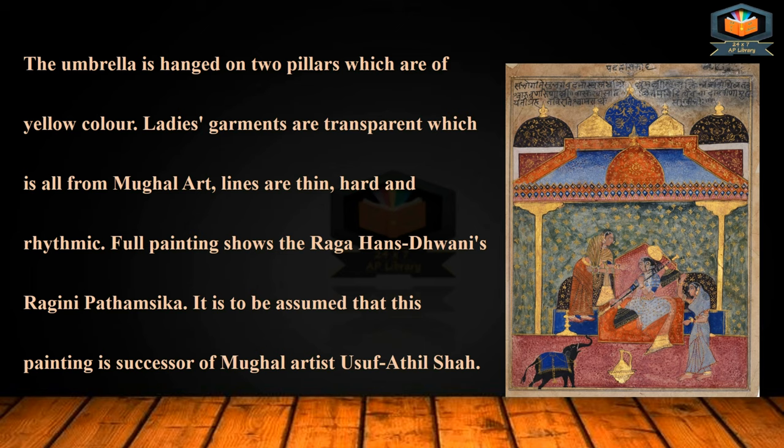The umbrella is hung on two pillars which are of yellow color. The ladies' garments are transparent, which is characteristic of Mughal art.